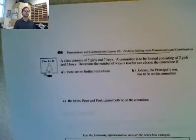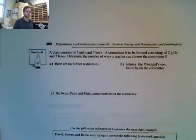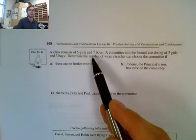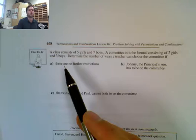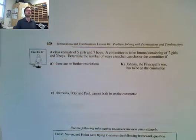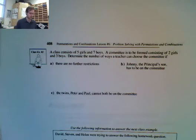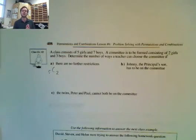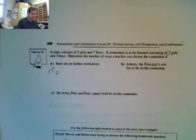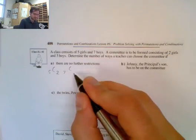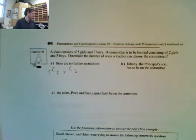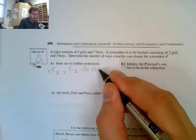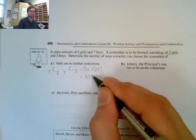Now let's take a look at class example number 3. A class consists of 5 girls and 7 boys. A committee is to be formed consisting of 2 girls and 3 boys. Determine the number of ways the teacher can choose the committee if there are no further restrictions. Out of 5 girls, we are choosing 2. Order does not matter. As long as they're chosen, they're chosen. Then out of 7 boys, we are choosing 3. I multiply those together. That's 10 multiplied by 35, which gives me 350.